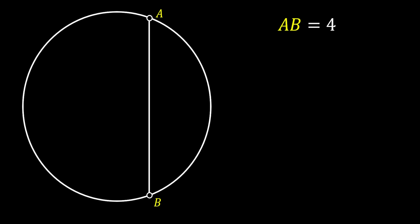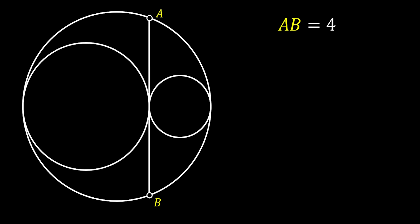We are going to start our problem with a circle, then we are going to draw a vertical chord, which we will label as AB, and we can say that the length of this chord is equal to 4. This chord will divide our circle into two segments, in which we will inscribe two circles, just as shown in the sketch.